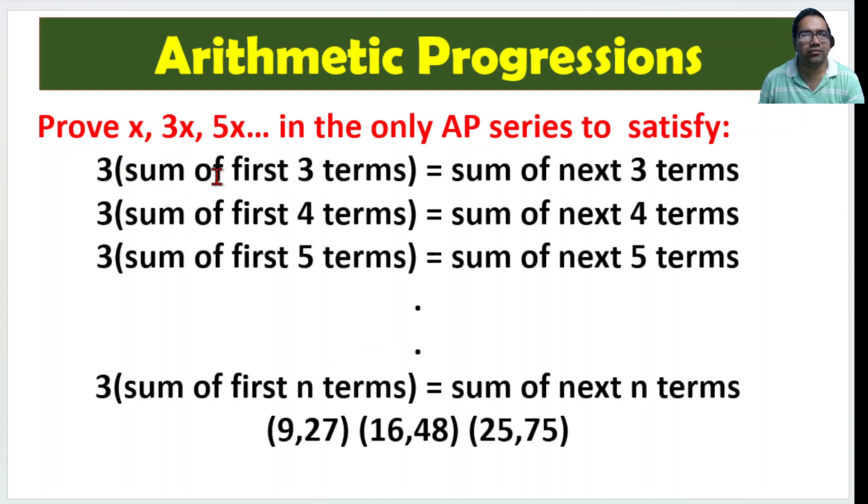So what they are saying, they are saying 3 into sum of first 3 terms is sum of next 3 terms. For a moment let's ignore x and let's call that this series is something like 1, 3, 5, 7, 9, 11, 13 when x equals 1. Basically this is the set of all odd numbers.